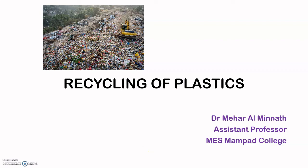We have seen the different types of plastics and polymers, their applications, synthesis, and properties. One of the major properties of most of the plastics and polymers we have discussed is that they are non-degradable — particularly non-biodegradable — and they persist on earth. Wherever they are dumped, they remain there, whether on the earth's surface or in the sea.